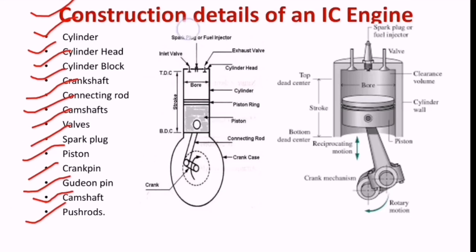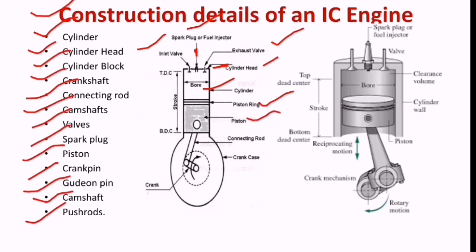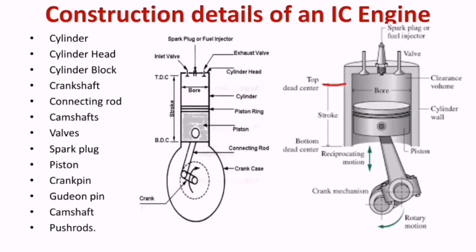Observe these figures. We can see the spark plug here. Exhaust valve and inlet valve — those are the valves. The cylinder head is at the top of the cylinder. Piston rings and piston are visible. Below is the connecting rod, crank case, and crankshaft. From TDC (top dead center) to bottom dead center — that distance is called a stroke. This is the clearance volume, and this is the cylinder wall.